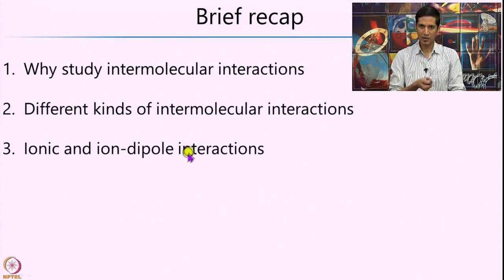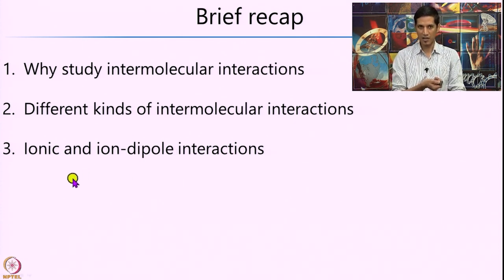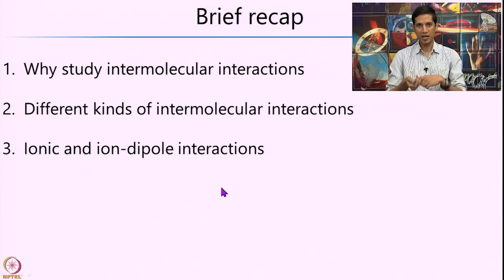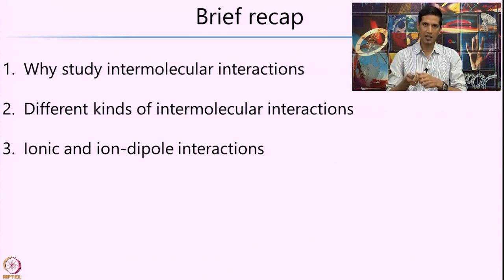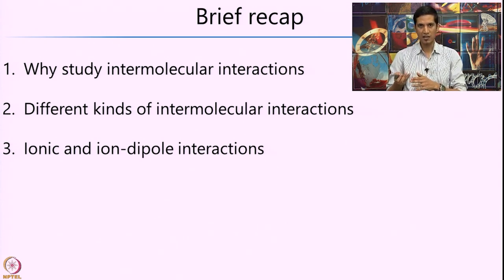After that, we looked in more detail at ionic as well as ion-dipole interaction, specifically the distance dependence of the potential energy of interaction between two species. We said that the ionic interaction, which goes as 1/R, is a long range interaction.